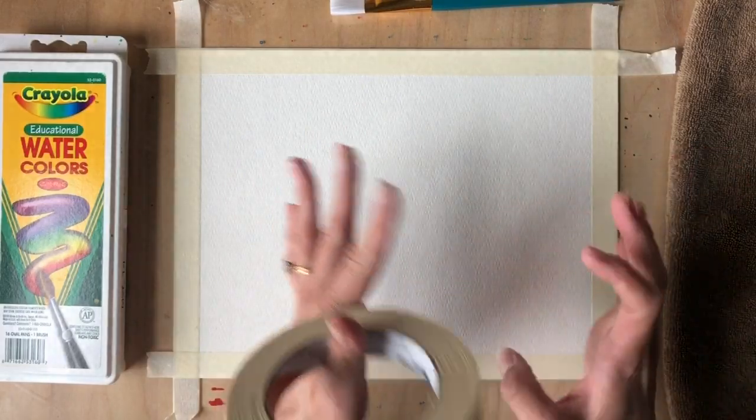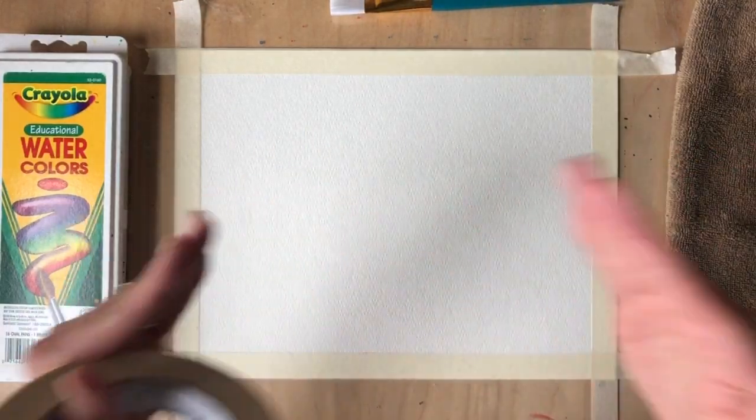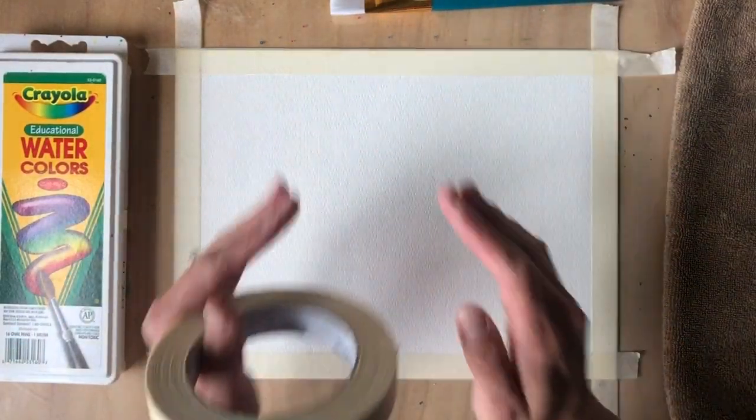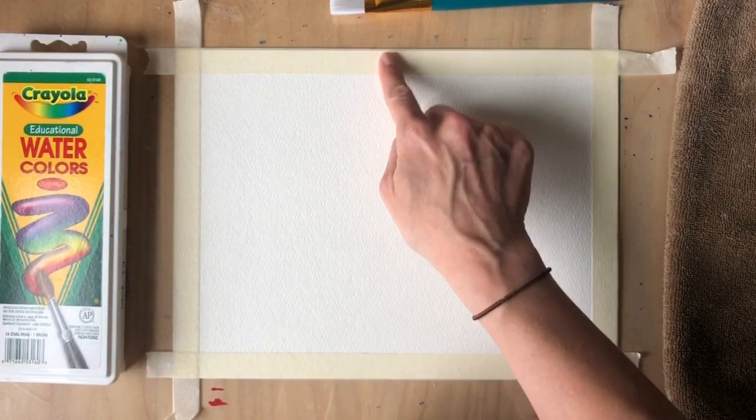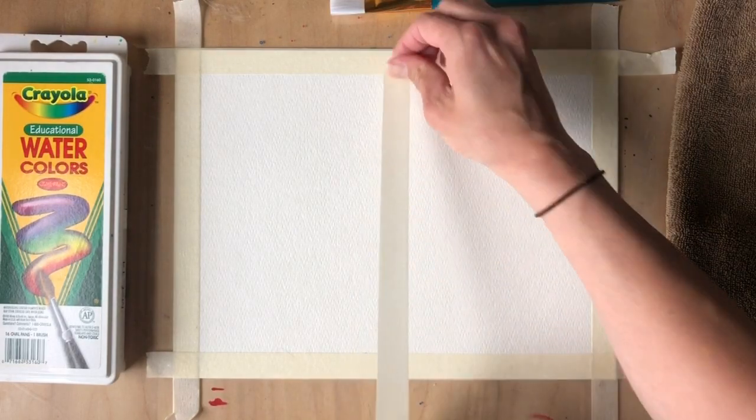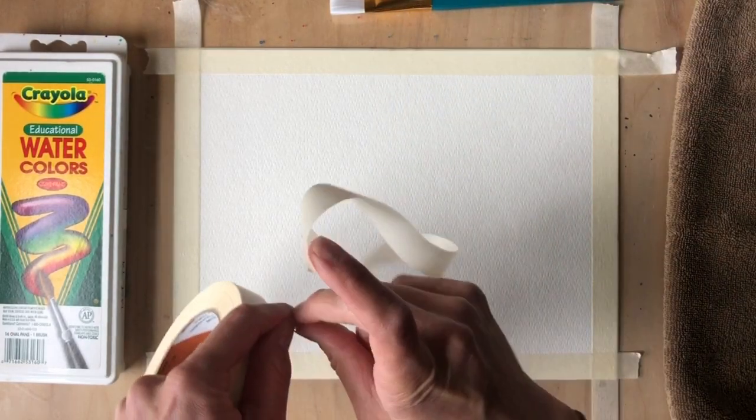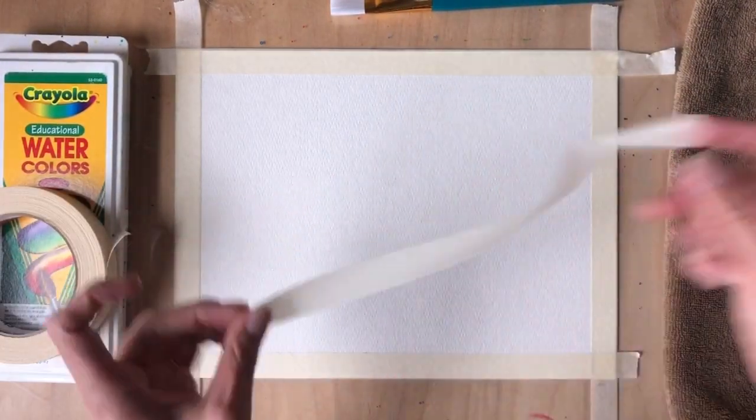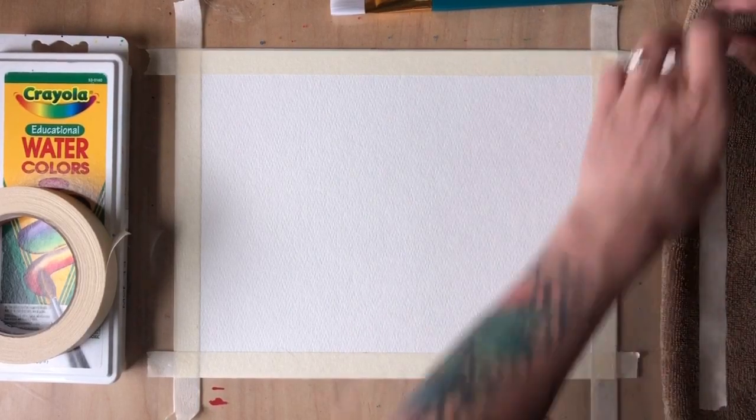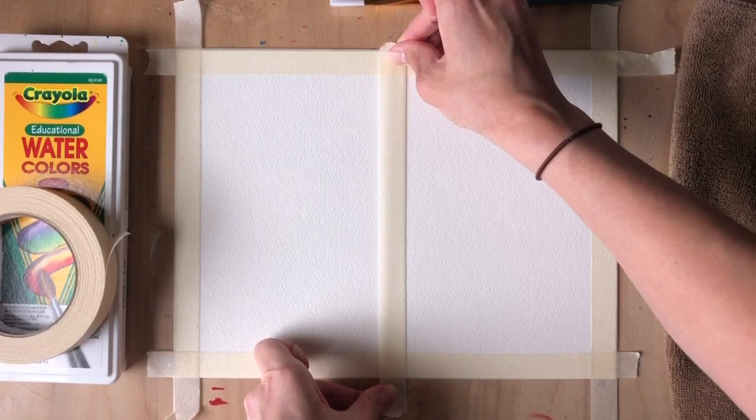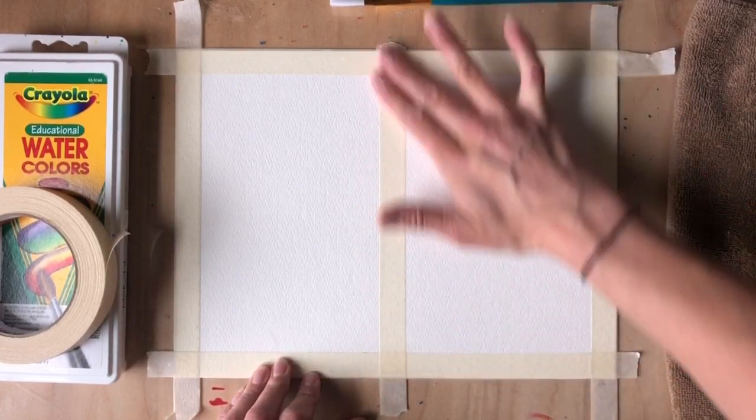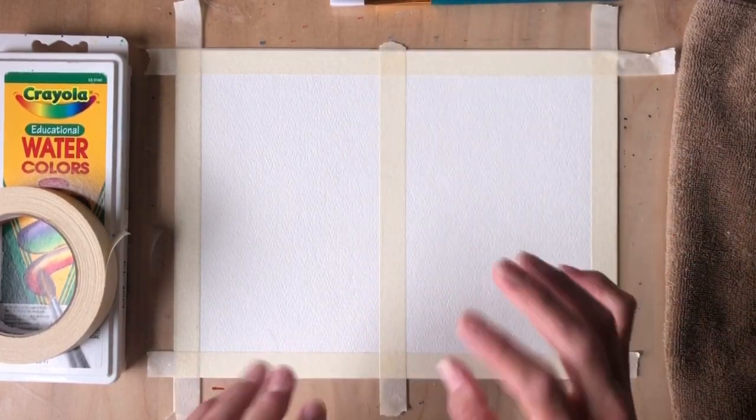But if you want to keep it even and the same on both sides, you can apply your knowledge of symmetry. To start, I'm just gonna split my window right in half. Same rules apply: rip it, stick it, place it, and make sure you really smooth that tape out. You don't want any air bubbles in there.